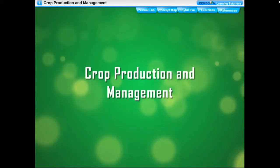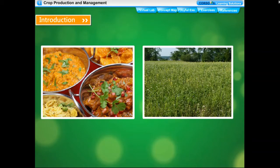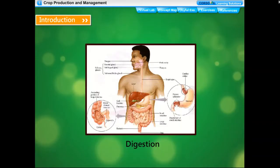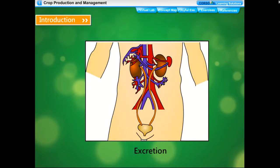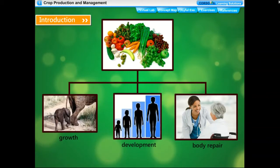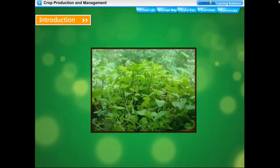Chapter one: Crop Production and Management. Food is one of the basic necessities of life for all living organisms. Food provides energy for carrying out all body functions such as digestion, respiration, and excretion. Food is required for growth, development, and body repair. It also protects the body from diseases.